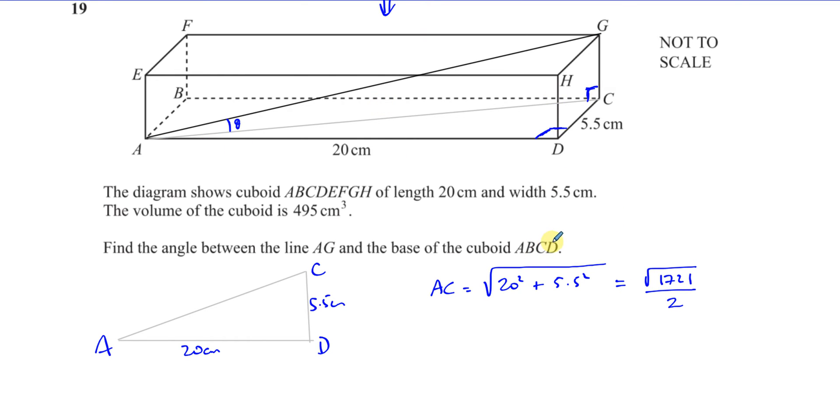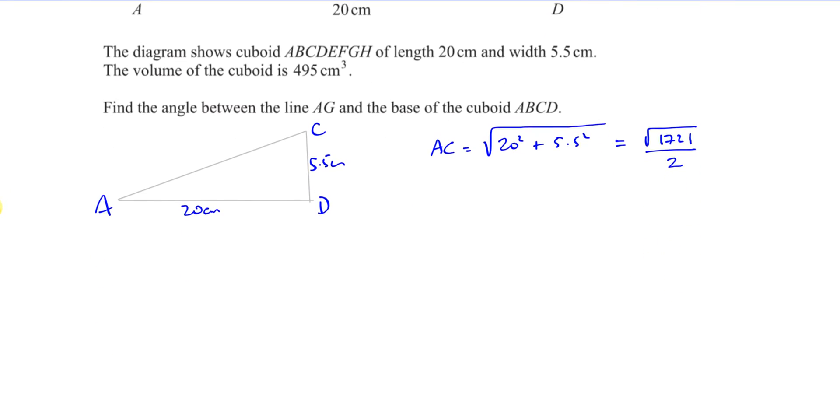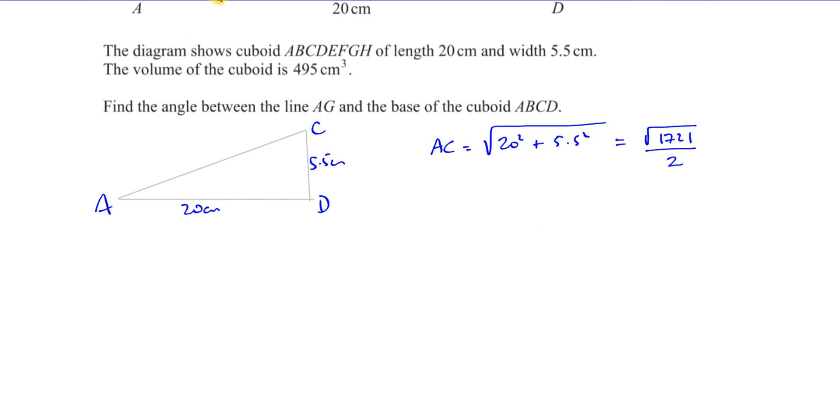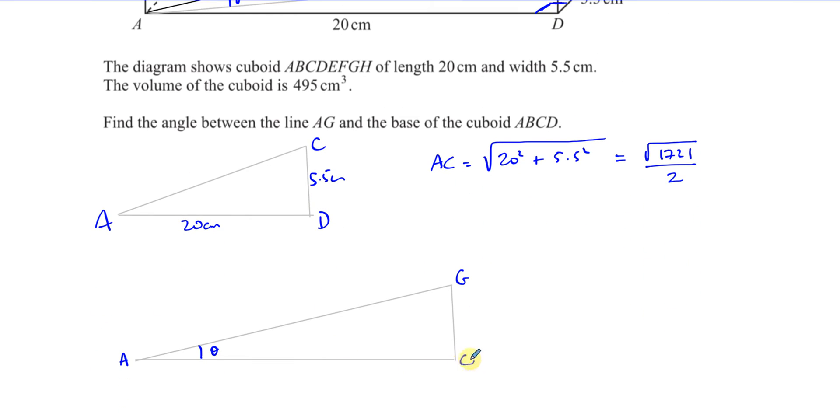Now we need to find, in our triangle, the triangle that we're using now, we've got AGC. So we're using a triangle AGC. This is what our objective is. This is the angle that we're trying to find. This is A, and this is G, and this is C. This is the right angle. And we now know the length of AC, which is the square root of 1721 over 2.